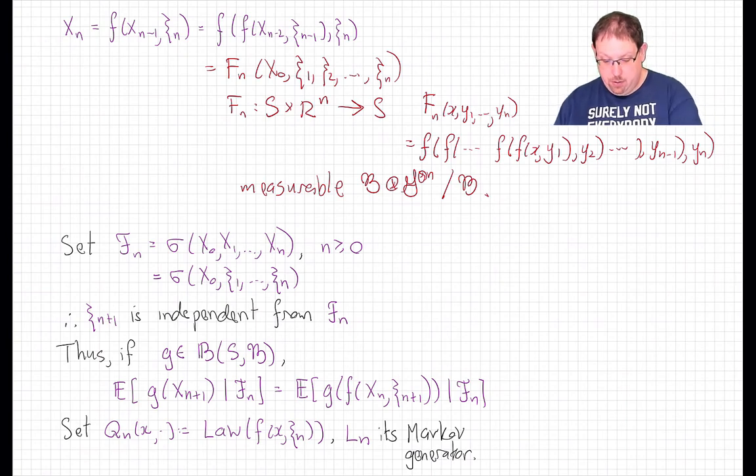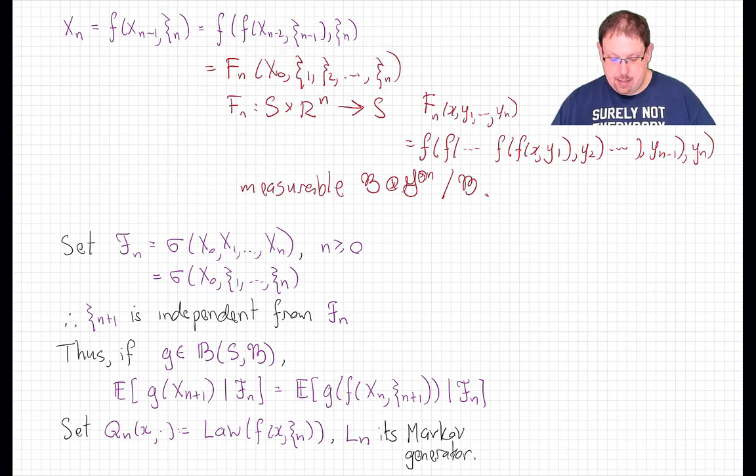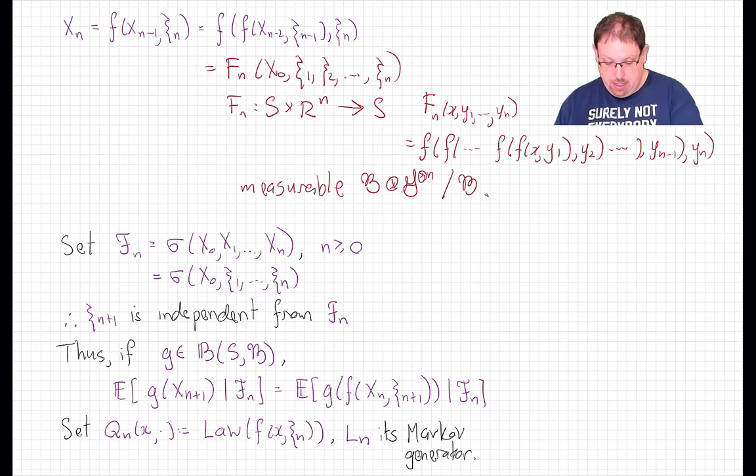So what this particular model of random dynamics tells us is that the X_n is determined by the X0 together with the input of the first n random noise variables. Now another way of saying that, which follows directly from this representation, is that if we look at the sigma field generated by the random variables X0 through X_n, that's the same as the sigma field generated by X0 together with just the ξ_1 through ξ_n.